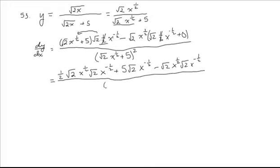All over square root of 2 times x to the 1 half plus 5, the quantity squared. Let's clean up that numerator a bit. Square root of 2 times square root of 2 is 2. x to the 1 half times x to the negative 1 half — two things with the same base — their exponents add, so that would be x to the 0. So those are going to cancel each other out, just like these are going to cancel each other out.